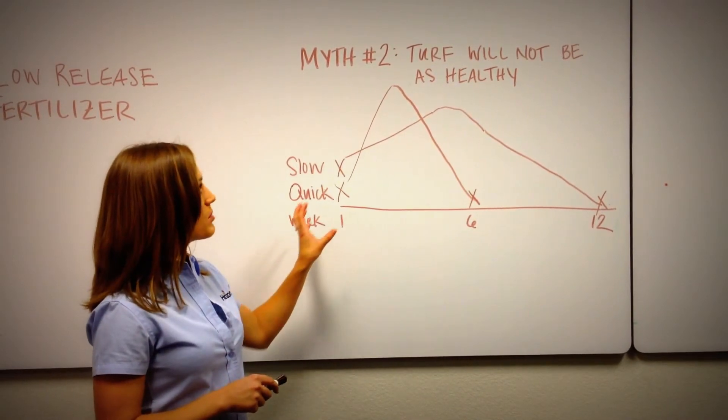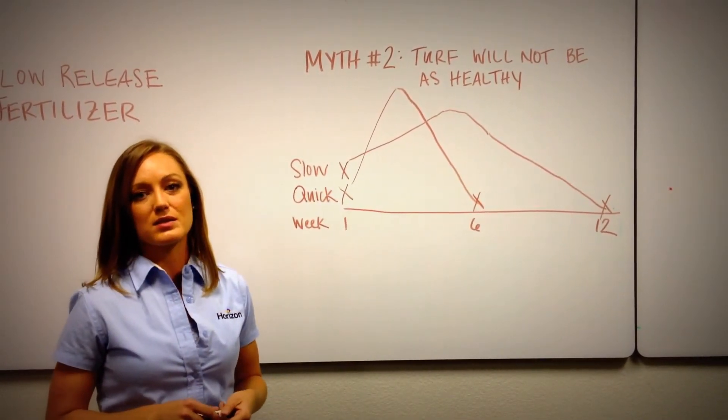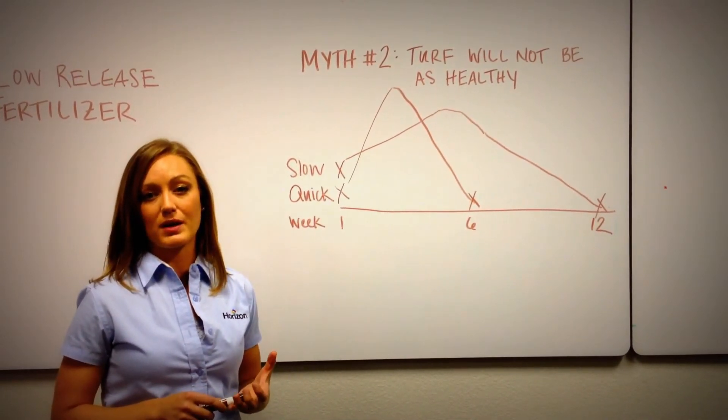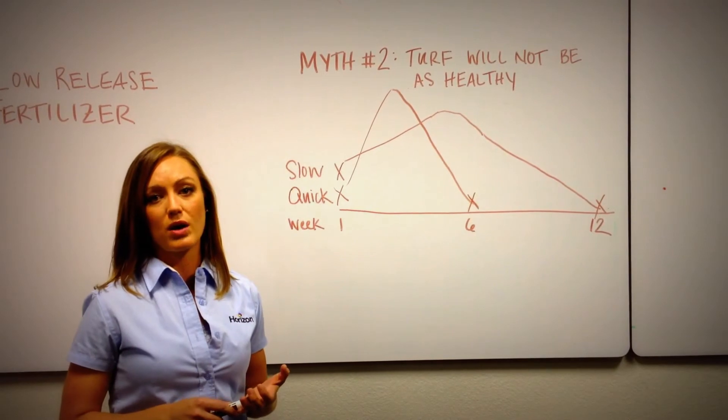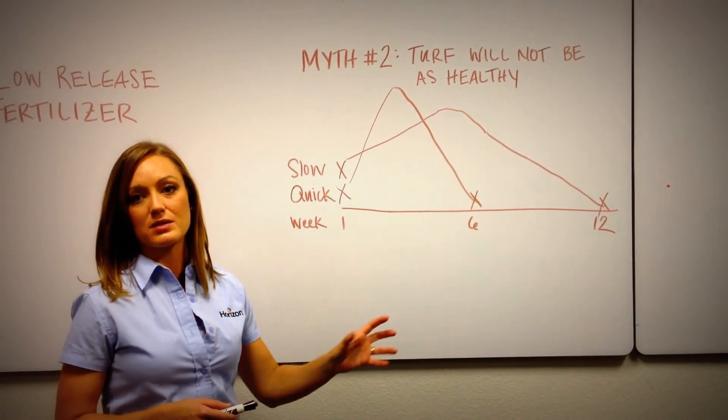So repeated flush quick release applications like this, really the end result is a very shallow root system that has a hard time mining for nutrients and water and it just becomes this vicious cycle versus the slow release is sustainable.